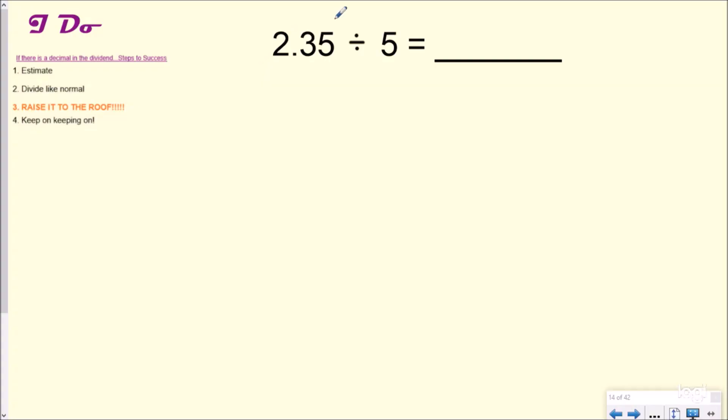So right here, I have 2.35 divided by 5. And so if I'm estimating this, I'm going to round that to 2, 2 divided by 5, which is really two fifths. And this is work you could kind of do in your head, which equals 0.4. So I think my answer is going to be somewhere around 0.4 or 0.40. This is kind of my estimate.